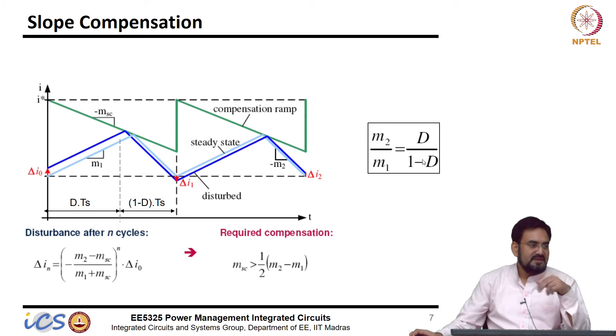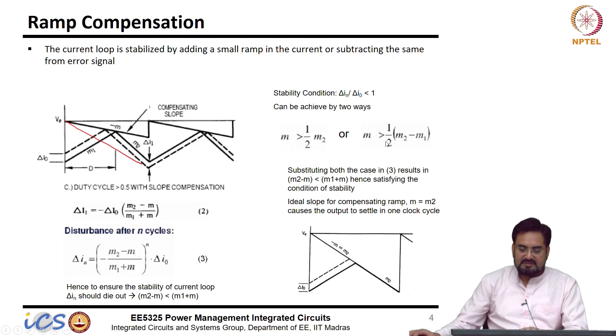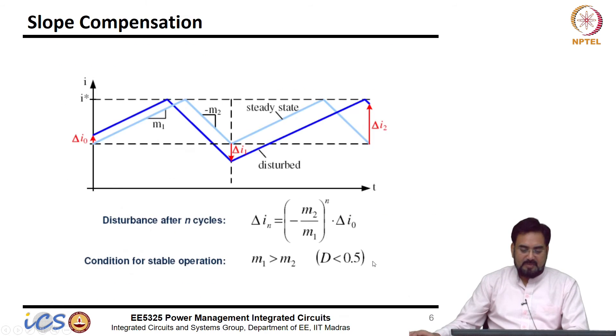You take Vin common from Vout. So, Vout over Vin will become D and inside you will have 1 minus D component. So, D over 1 minus D correct. So, this ratio is nothing but D over 1 minus D and I know my slope compensation. So, from here this equation if you look at M. So, when you had M, if M is greater than half of M2 minus M1, this will always remain stable correct.